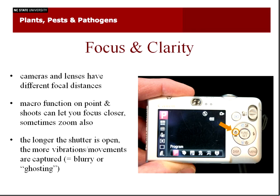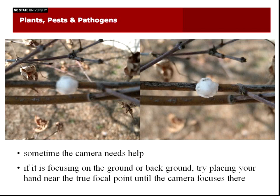Some cameras like point-and-shoots have different focal distances. One of the very important things to use if you have a point-and-shoot is the flower symbol — the macro function. That's going to let you hold your camera up close to the subject and get a more magnified picture. Also, if the shutter is open longer, you're going to have more vibrations or movement captured. So either using a flash or holding the camera as still as you can while you're taking the photo are good things to do to get a very in-focus photo.